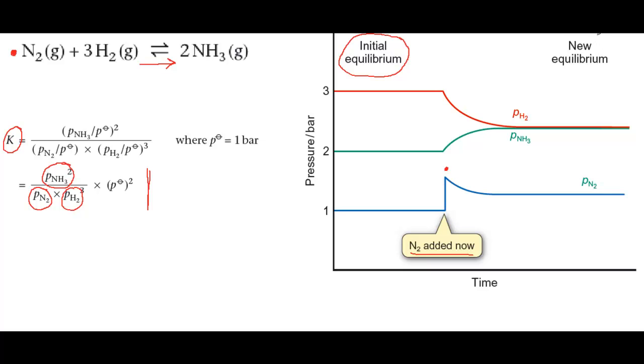When the reaction comes to its new equilibrium position, it is with PN2 increased, although not as much as when it spiked. PN3 has also increased, but PN2 has decreased, because H2 has been used up to make the extra NH3.